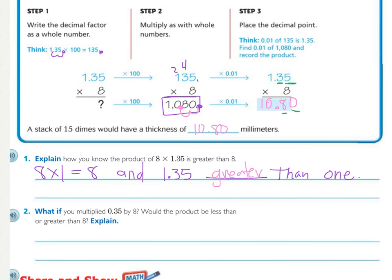So, looking because of that, let's look at number two. What if you multiplied 35 hundredths by 8? Would the product be less than or greater than 8? What do you think? It will be less because, how do you know? Because 35 hundredths is less than 1 and if 8 times 1 is 8, anything less than 1 is going to be less than 8, when multiplied.